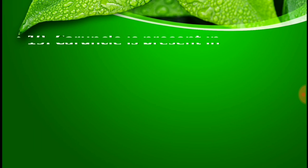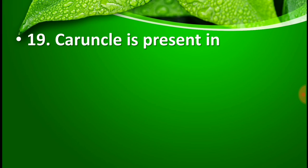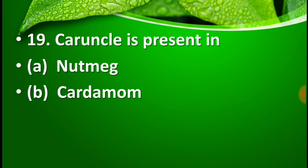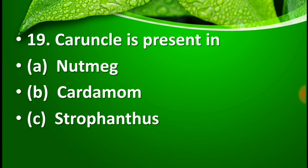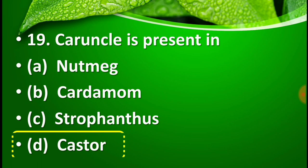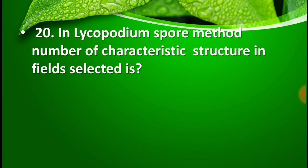Question number 19: Caranchol is present in — option A: nutmeg, option B: cardamom, option C: strophanthus, and option D: castor. You may pause the video to think about the right answer. The right answer for this question is option D — castor. Caranchol is present in castor.